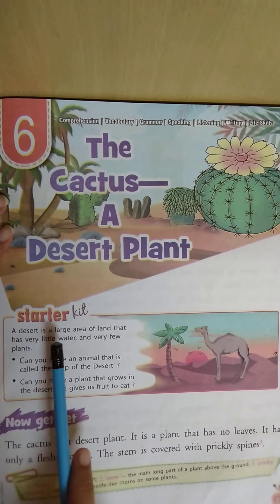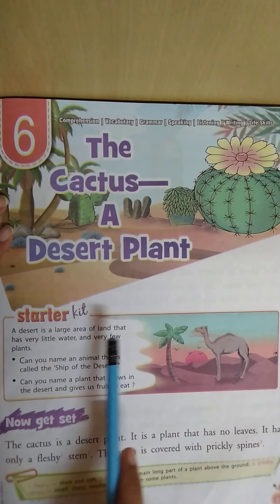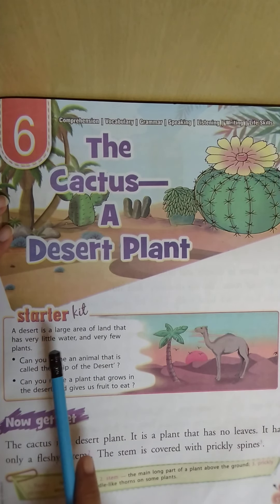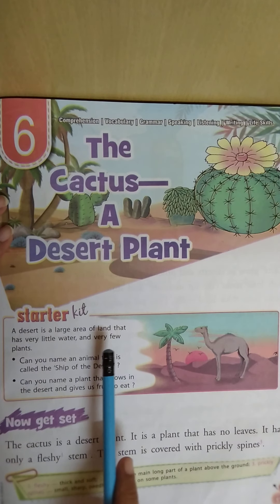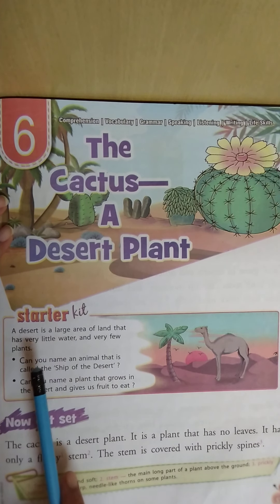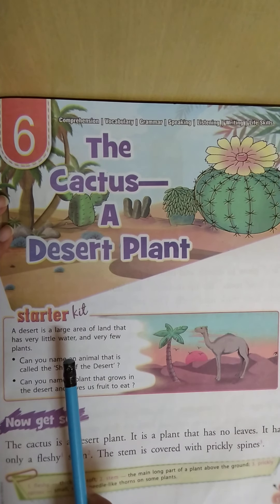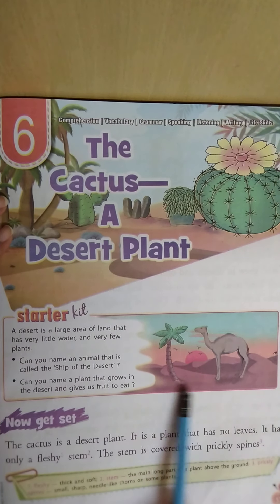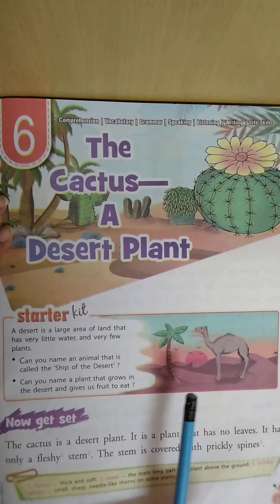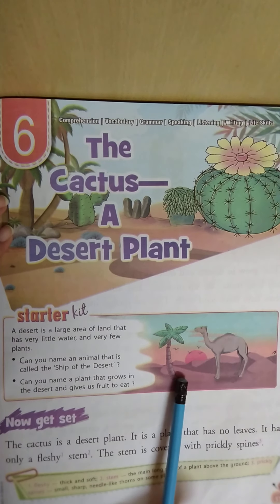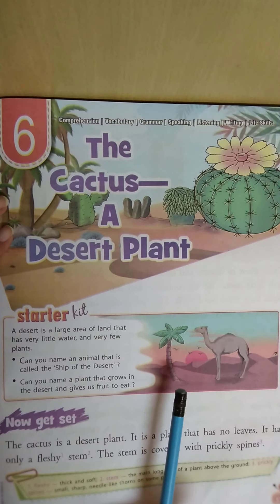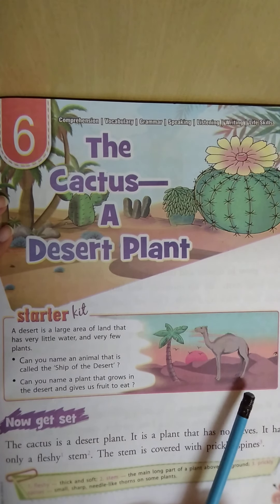A desert is a large area of land that has very little water and very few plants. The place which has very little water and very few plants is known as a desert area. Can you see this picture where lots of sand is there, very little water and very few plants? Those areas are known as desert regions.